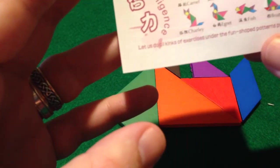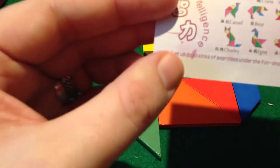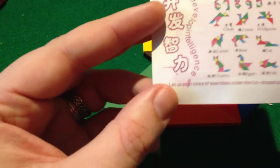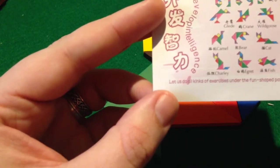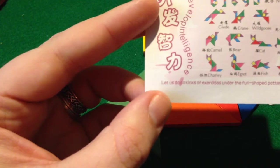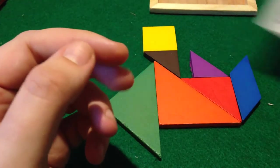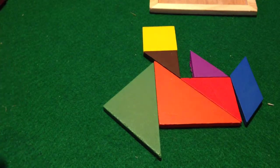So what have we got? Developing intelligence? This is interesting. I always like badly translated instruction leaflet things. So it says here, let us do all kinds of exercises under the fun shaped patterns, please. So there's a life lesson for everybody in that, I think.